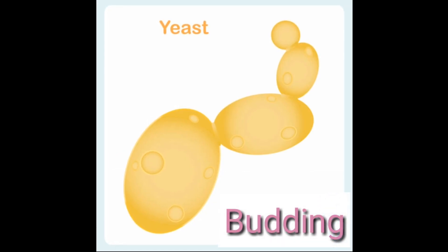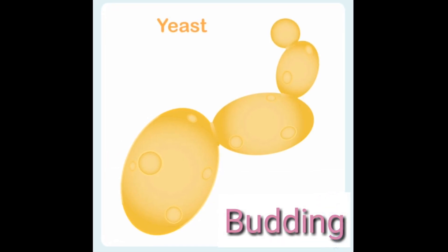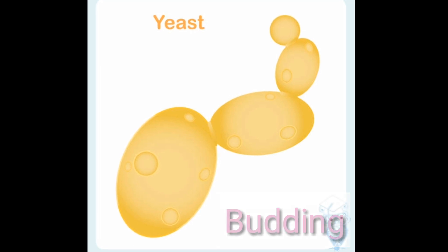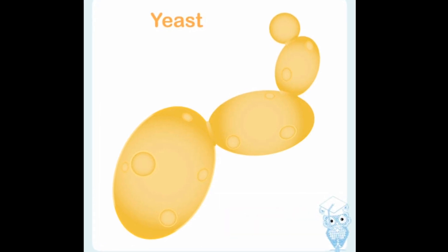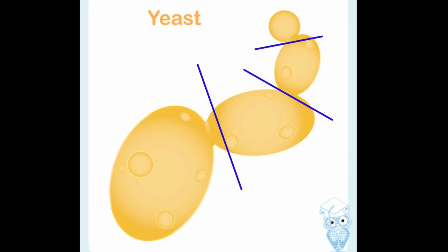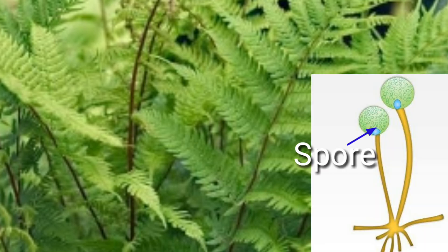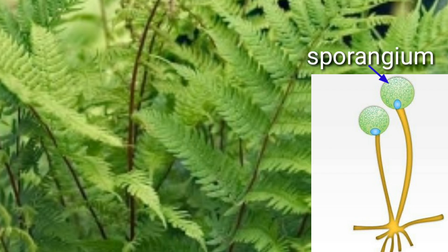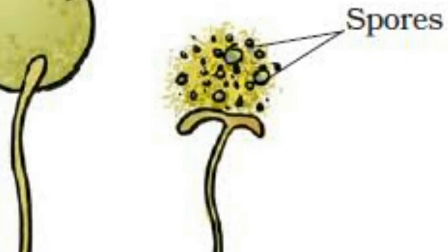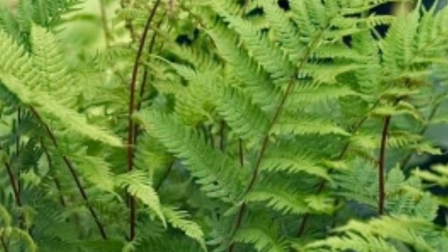Next is budding, where a small outgrowth-like structure is formed in the parent's body and gets detached when it finds a favorable climate. Next is spore formation, seen in different algae and fungi. Spores are very minute structures present in a bag called a sporangium, which burst out when they find a favorable environment, and from there new individuals develop.